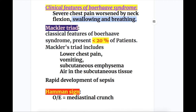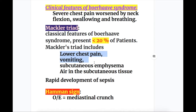What is Mackler's triad? Mackler's triad includes the classical features of Bohr-Haave syndrome but is present only in less than 20% of patients. It includes lower chest pain, vomiting, and subcutaneous emphysema — air in the subcutaneous tissues.